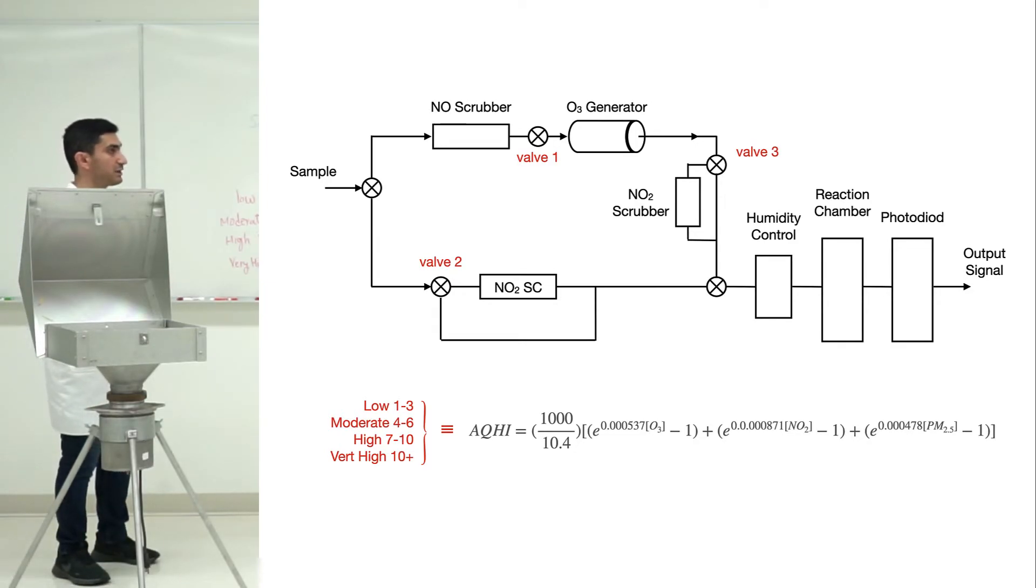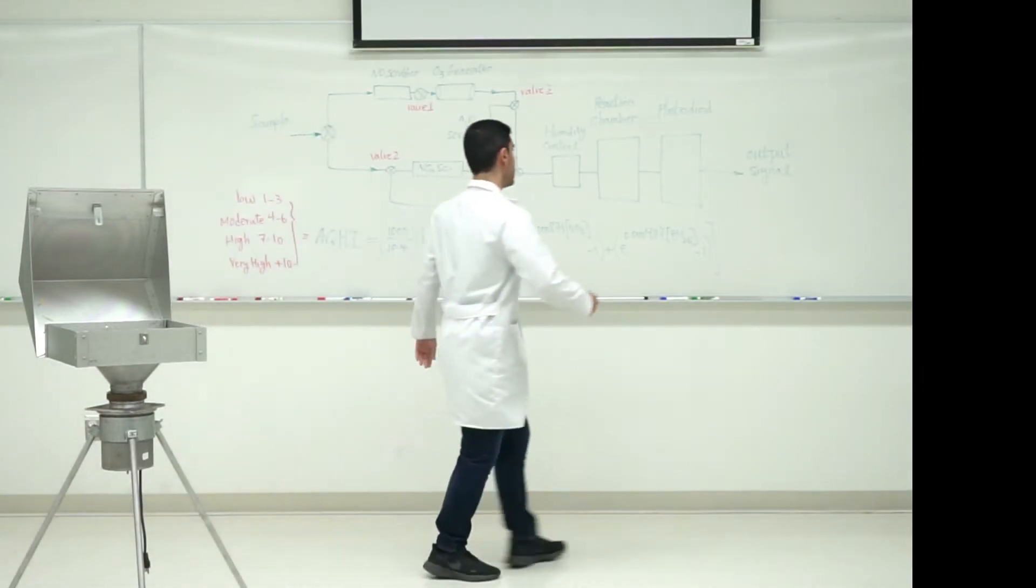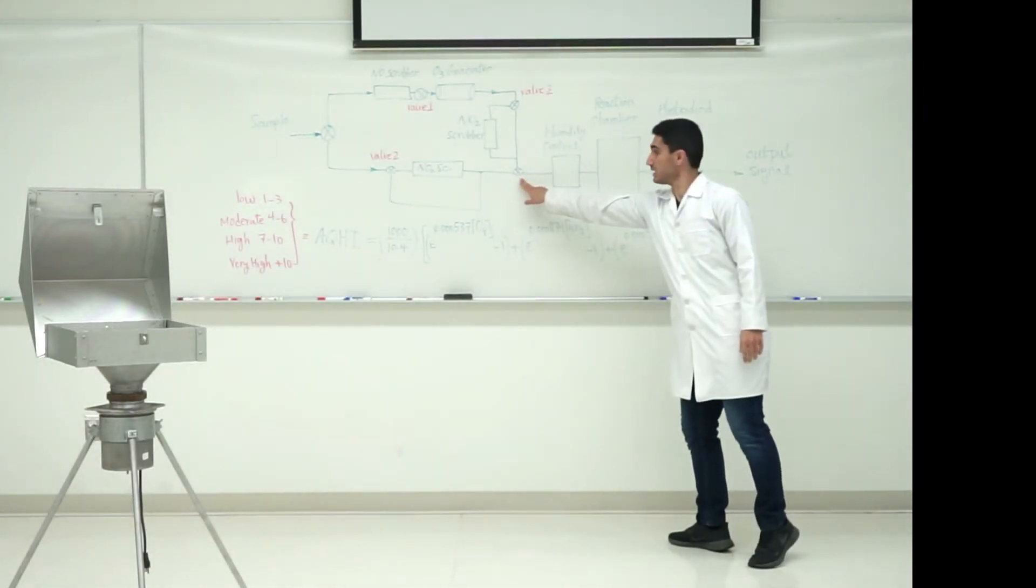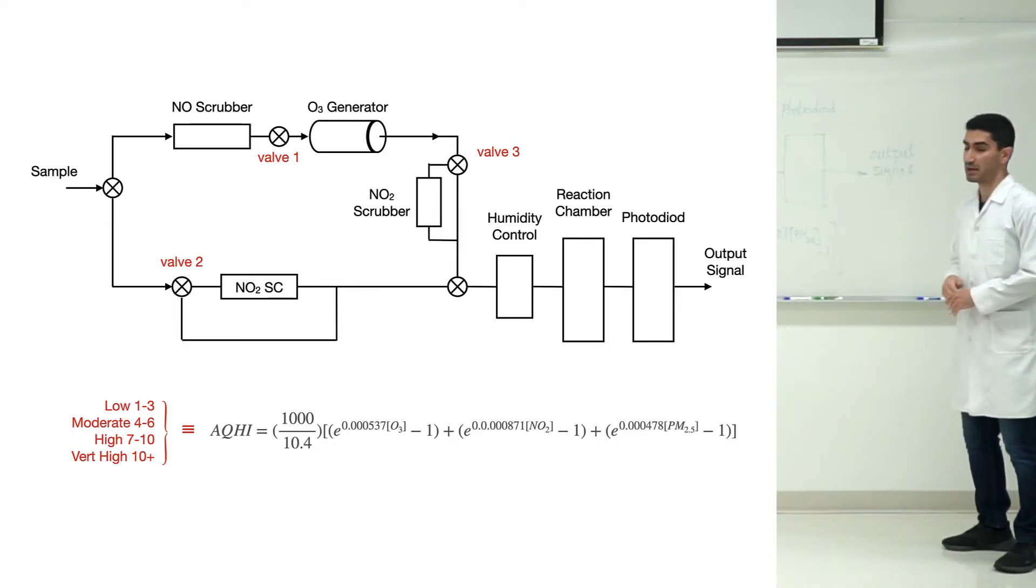By changing the position of the valves, we can let the air come to this three-way junction. After that, we have humidity control, then a reaction chamber.